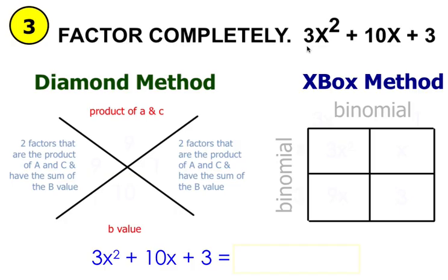The process of factoring the diamond method, the xbox method, it's still the same, but I just wanted to show you a different example.